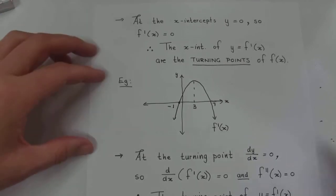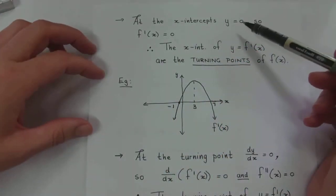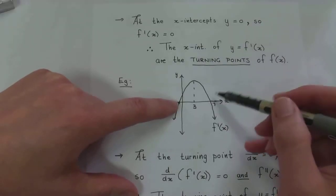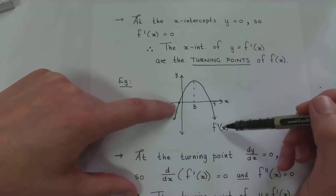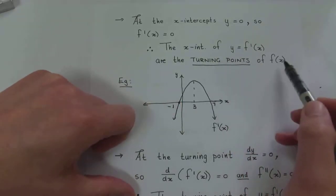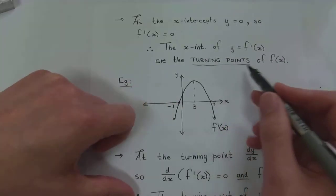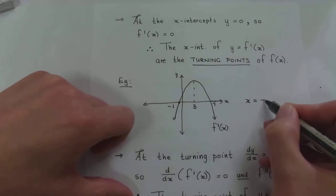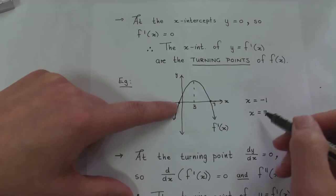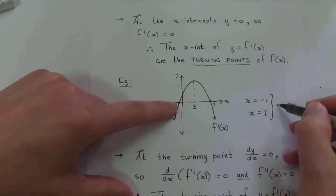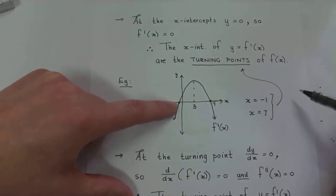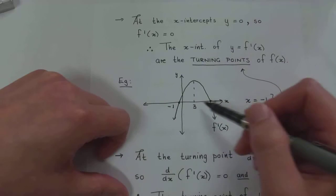At the x-intercepts — where y equals zero — and these are the x-intercepts of the derivative graph, not of f(x) — the derivative equals zero. So the x-intercepts of this particular graph are then the turning points of the original graph. So at x equals negative one and at x equals seven, those x-intercepts of the derivative function are the turning points of the original graph, which is not illustrated here.